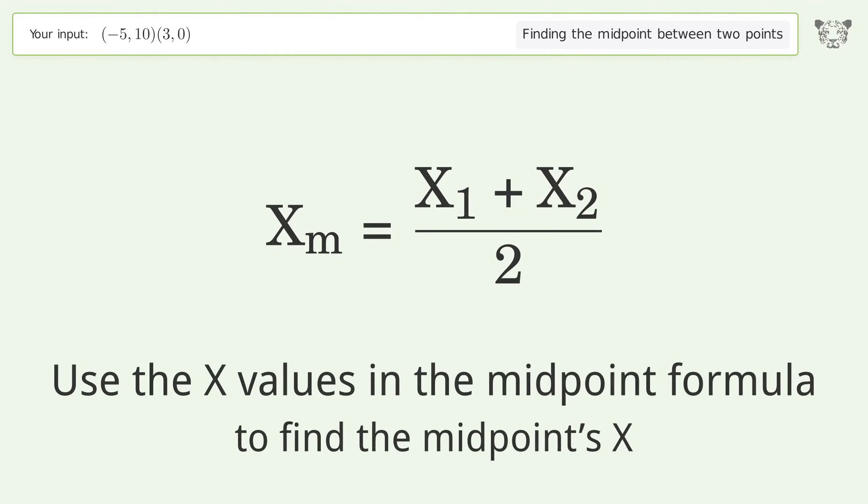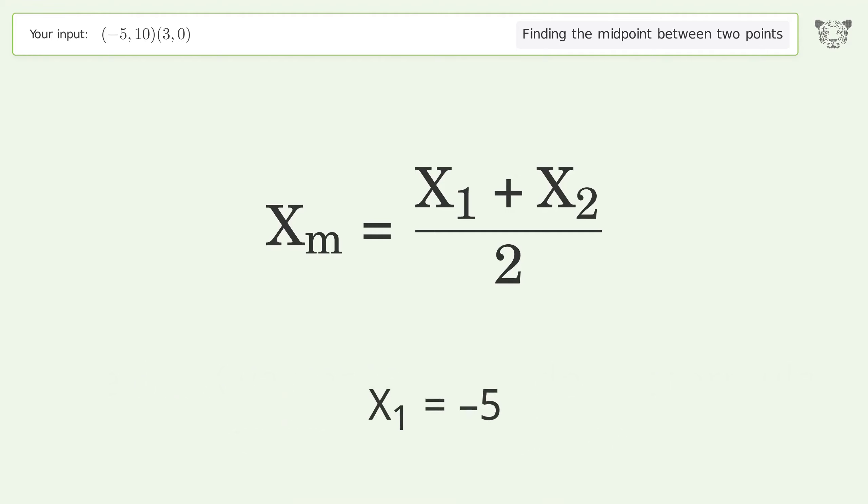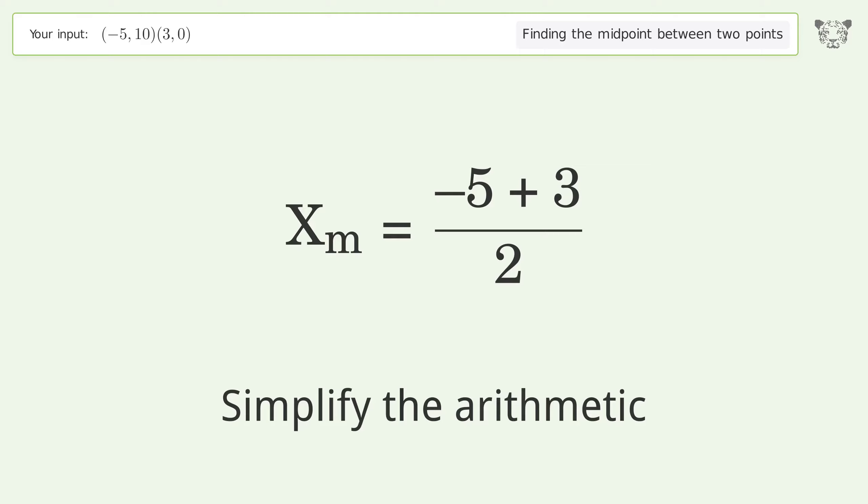Use the x values in the midpoint formula to find the midpoint's x. X one equals negative five. X two equals three. Simplify the arithmetic.